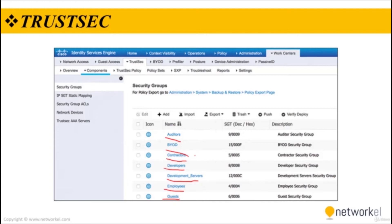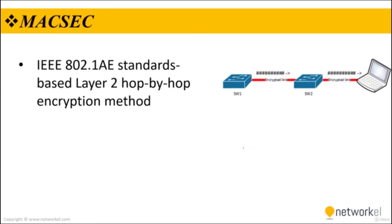What is actually inserted into a layer 2 frame is an SGT tag as a numeric value, shown in the SGT column in both decimal and hexadecimal notation. MACsec is an IEEE 802.1AE standards-based layer 2 hop-by-hop encryption method. This means traffic is encrypted only on the wire between two MACsec peers and is unencrypted as it is processed internally within the switch.